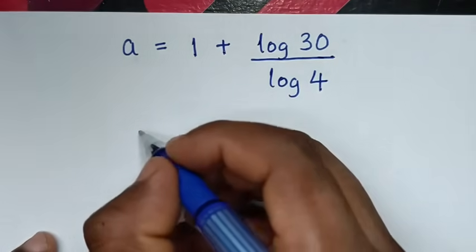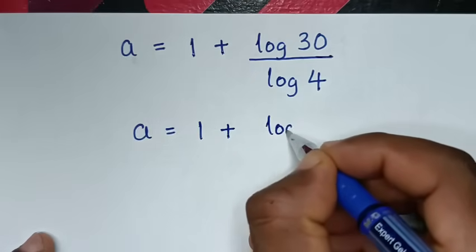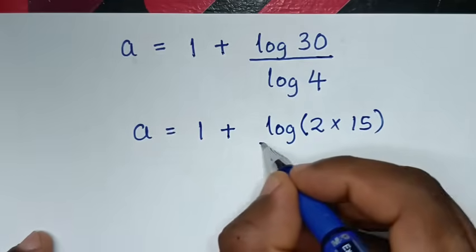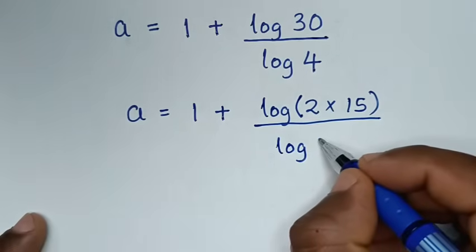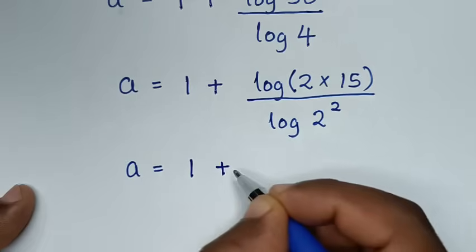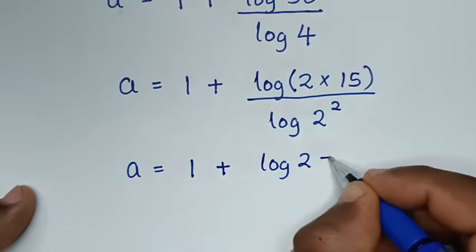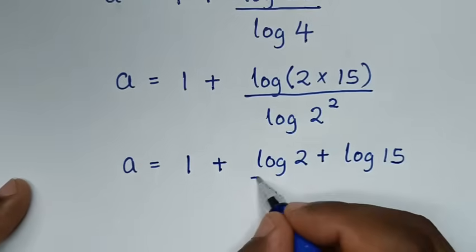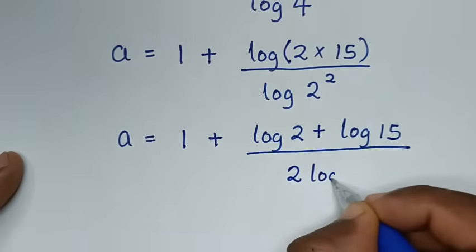So a is equal to 1 plus log of 30 over log of 4. Now 30 is the same as 2 times 15, and 4 is the same as 2 times 2, which is 2 squared. So the denominator log of 4 becomes log of 2 squared.